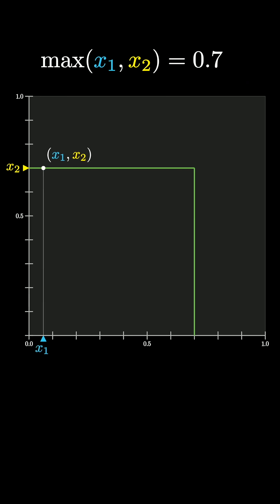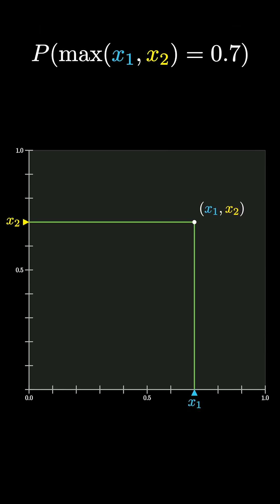In general, with continuous values, it's not very helpful to ask the probability of equaling a certain number, since the answer tends to be infinitesimal. But what is helpful is to ask the probability that your random value is less than or equal to a certain number.